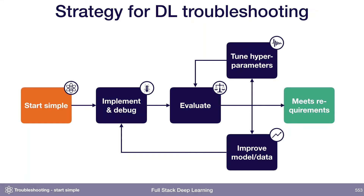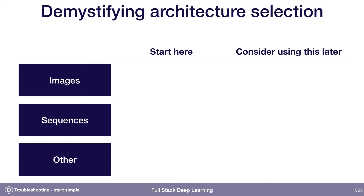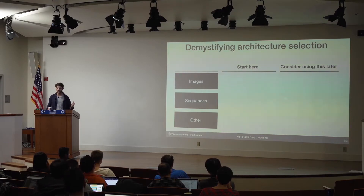Starting off with the first step of this troubleshooting flow, which is starting simple. There are a few things to consider when you're starting simple. The first is choosing a simple architecture — one that's easy to implement and is likely to get you part of the way towards solving your problem without introducing as many bugs. Architecture selection is one of the really intimidating parts of getting into deep learning because there are tons of papers coming out all the time, all claiming to be state of the art, and they get really, really complicated really fast.